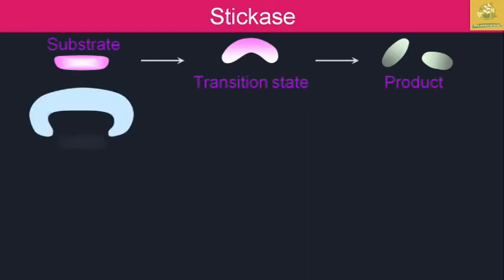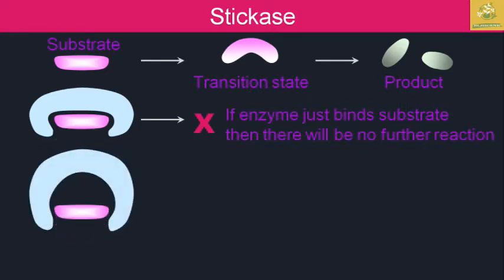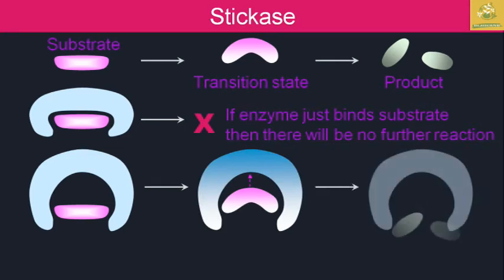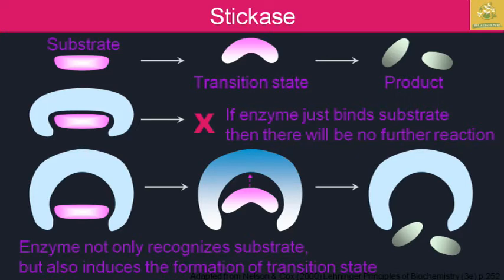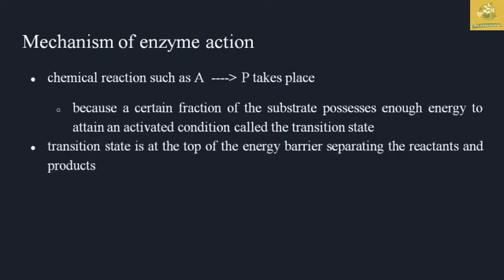In this picture, the substrate has a transition state and is used to give the product. If the enzyme just binds the substrate then there will be no further reaction. The substrate must go inside the enzyme — not only recognize the substrate but also induce the formation of the transition state. The transition state is at the top of the energy barrier separating the reactants and products.